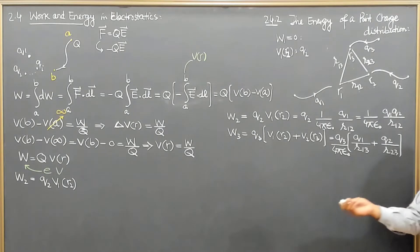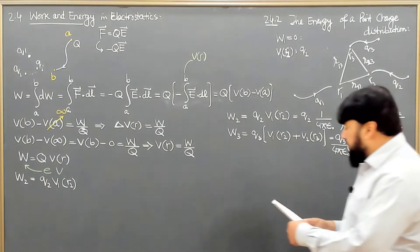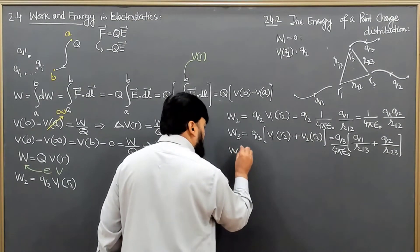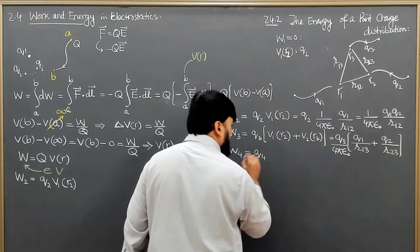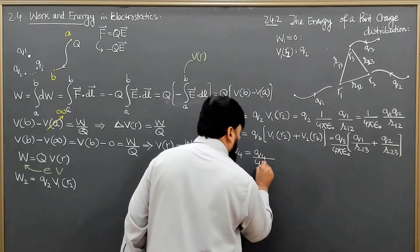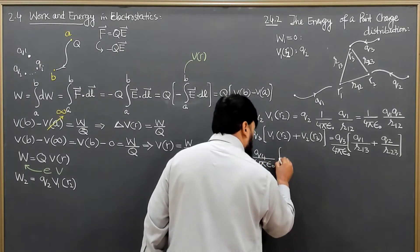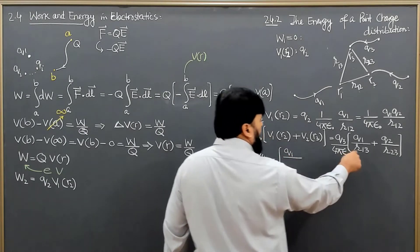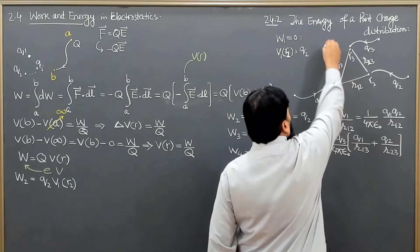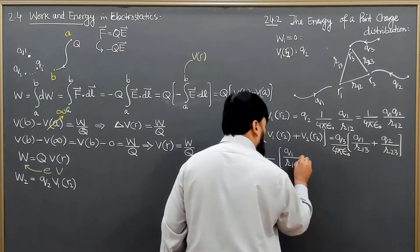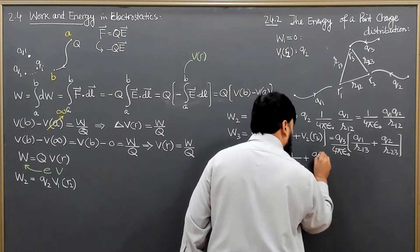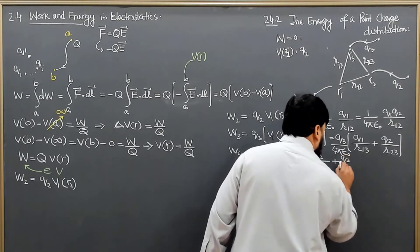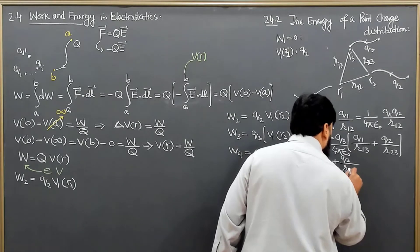Three charges are now there and the fourth charge we are bringing in. By the same analogy, we will have Q4 divided by 4π epsilon naught, and then Q1 over R14, plus Q2 over R24, plus Q3 over R34.